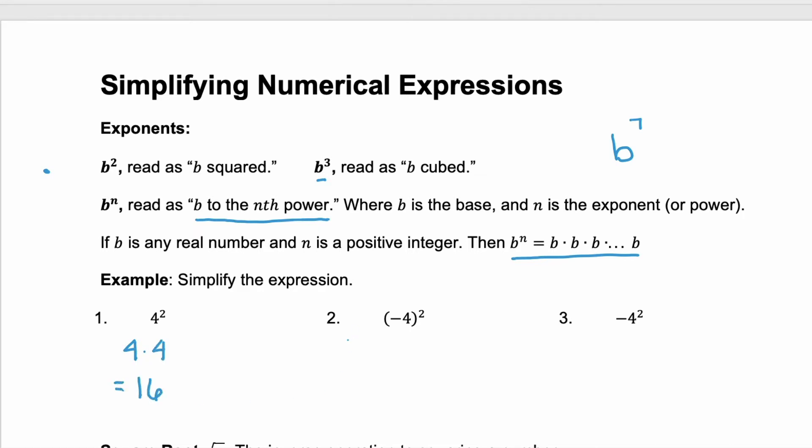The second, notice that negative 4 is in parentheses, and the exponent is attached to the parentheses. That means whatever's inside the parentheses is what is being squared. Or here you have negative 4 times negative 4. Remember a negative times a negative is going to give us a positive, so this one will also equal positive 16.